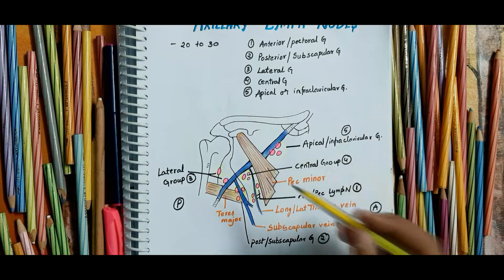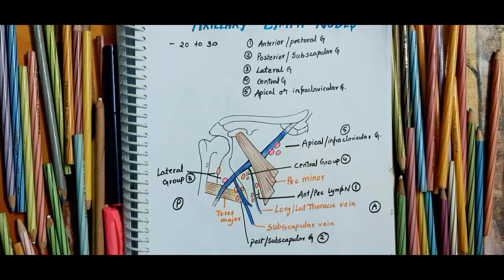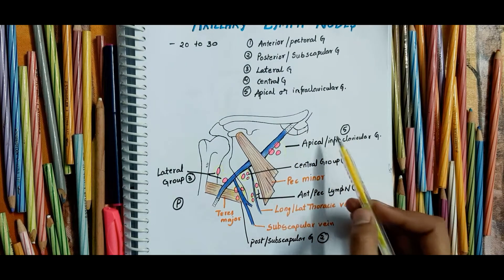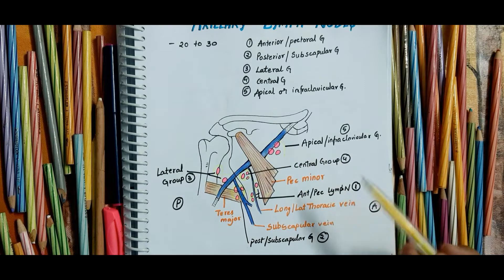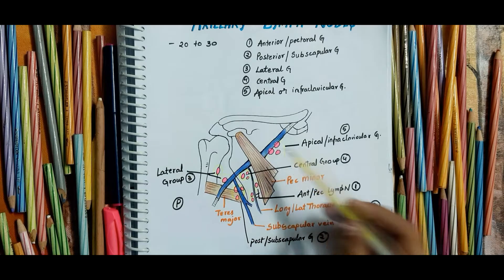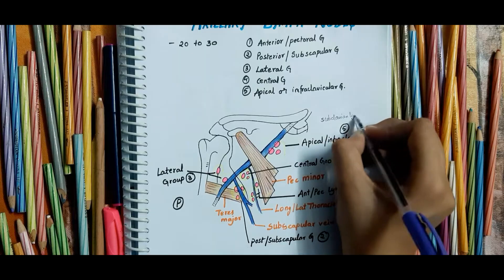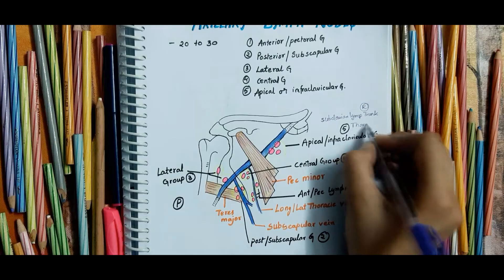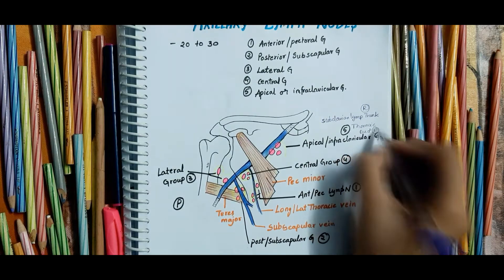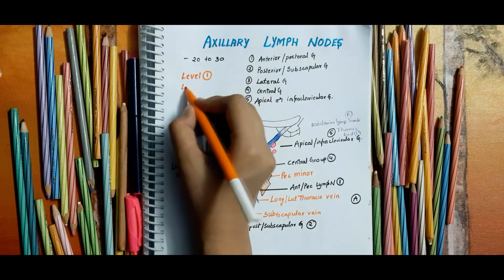Now coming to the fifth variety, the apical or infraclavicular group. They are situated deep to the clavipectoral fascia at the apex of the axilla along the axillary vein. They are of great clinical importance because they receive lymph directly from the upper part of the breast and indirectly from the central group. They drain into the subclavian lymph trunk on the right side and into the thoracic duct on the left side.